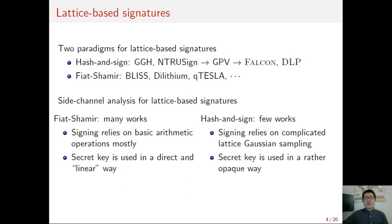Nowadays, there have been many side-channel works for lattice signatures. However, most of this work is for Fiat-Shamir signature schemes. Actually, the signing algorithm of a Fiat-Shamir scheme usually relies on basic arithmetic operations mostly, and the secret key is used in a direct and linear way. By contrast, in the hash-and-sign scheme, the signing algorithm often relies on lattice Gaussian sampling. So, the secret key is used in a rather opaque way.